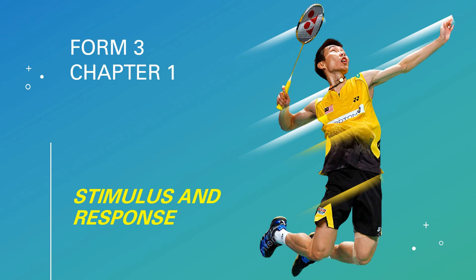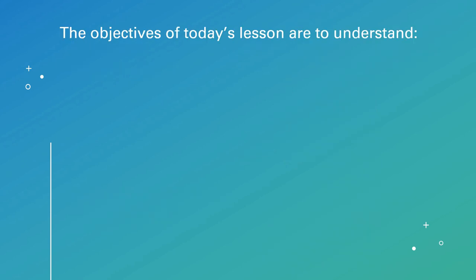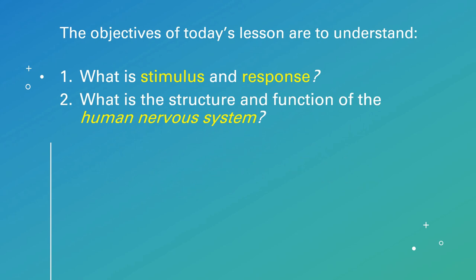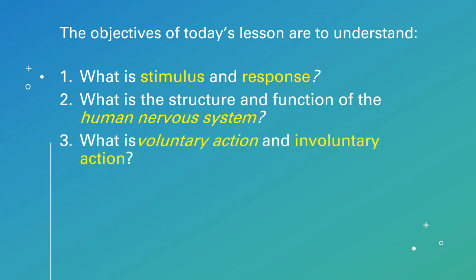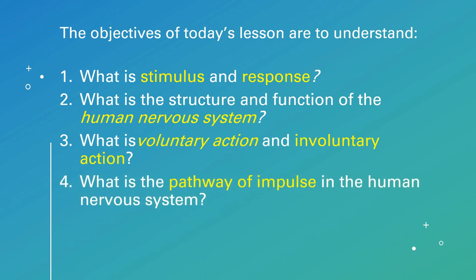Hi students, welcome to my video. Today I'm going to share a lesson on Chapter 1 of Form 3. Today's topic will be on stimulus and response and the human nervous system. The objectives are: number one, understand what is stimulus and response; two, the structure and function of the human nervous system; three, voluntary action and involuntary action; four, the pathway of impulse in the human nervous system.